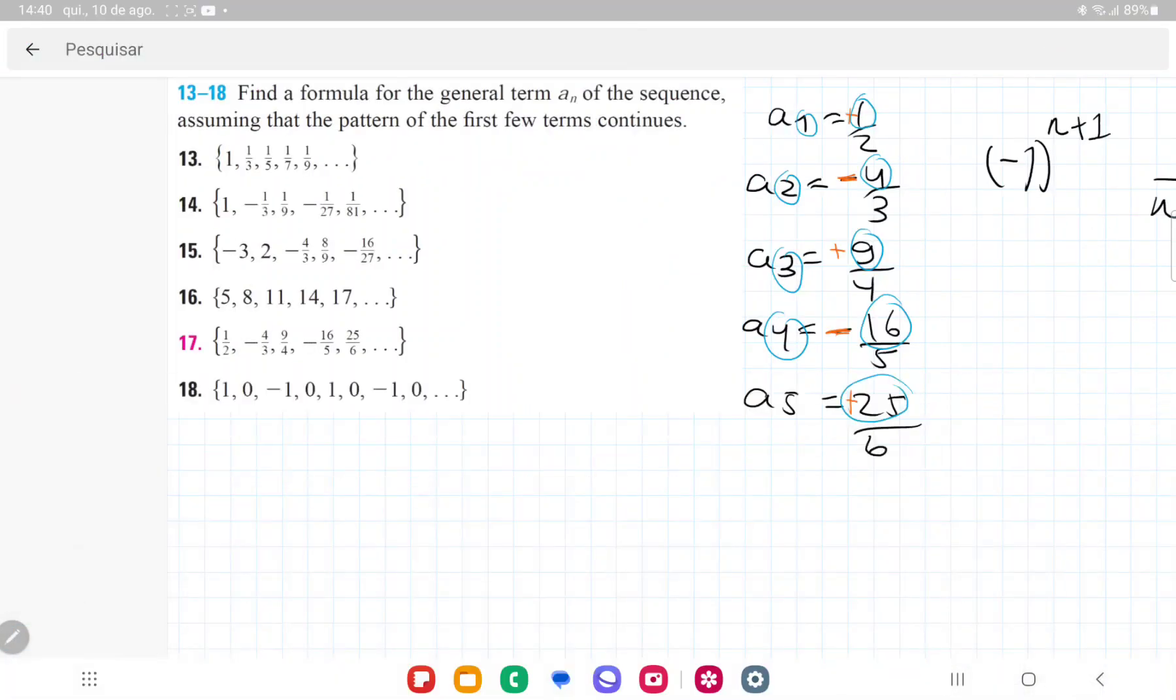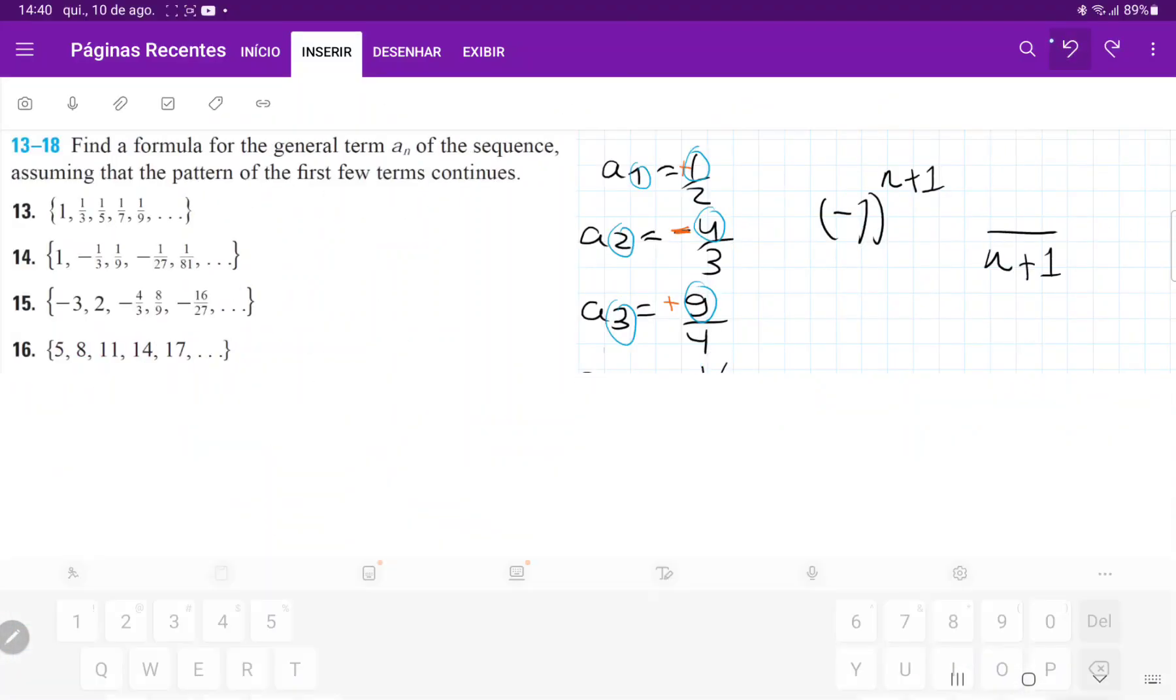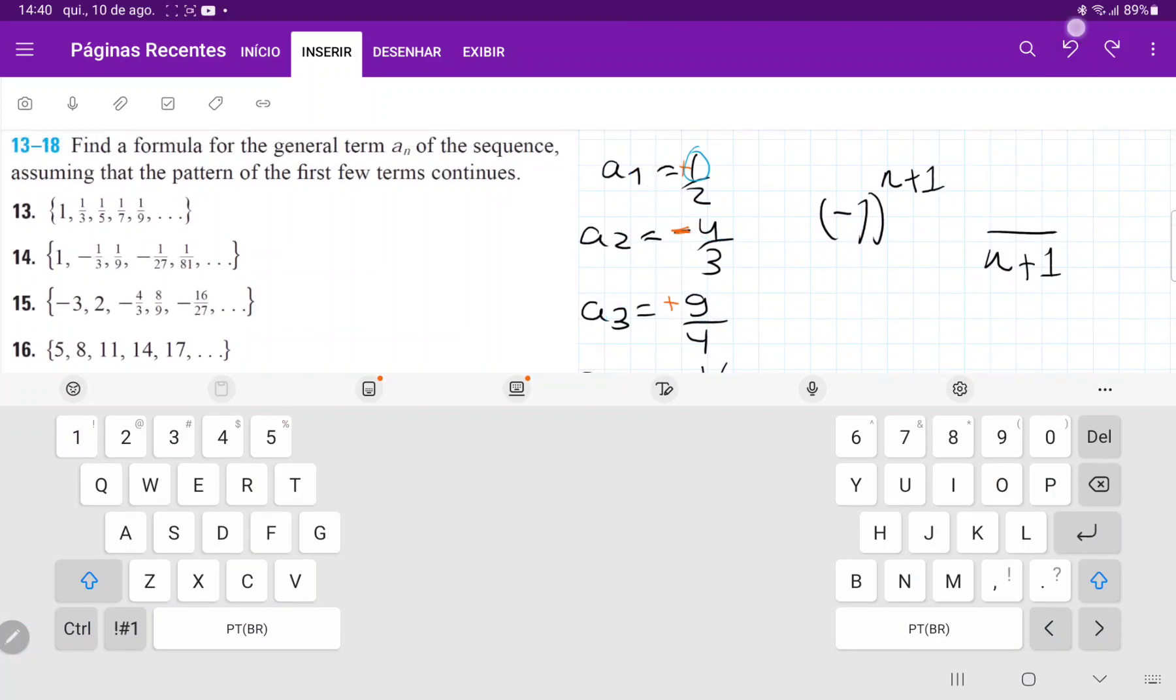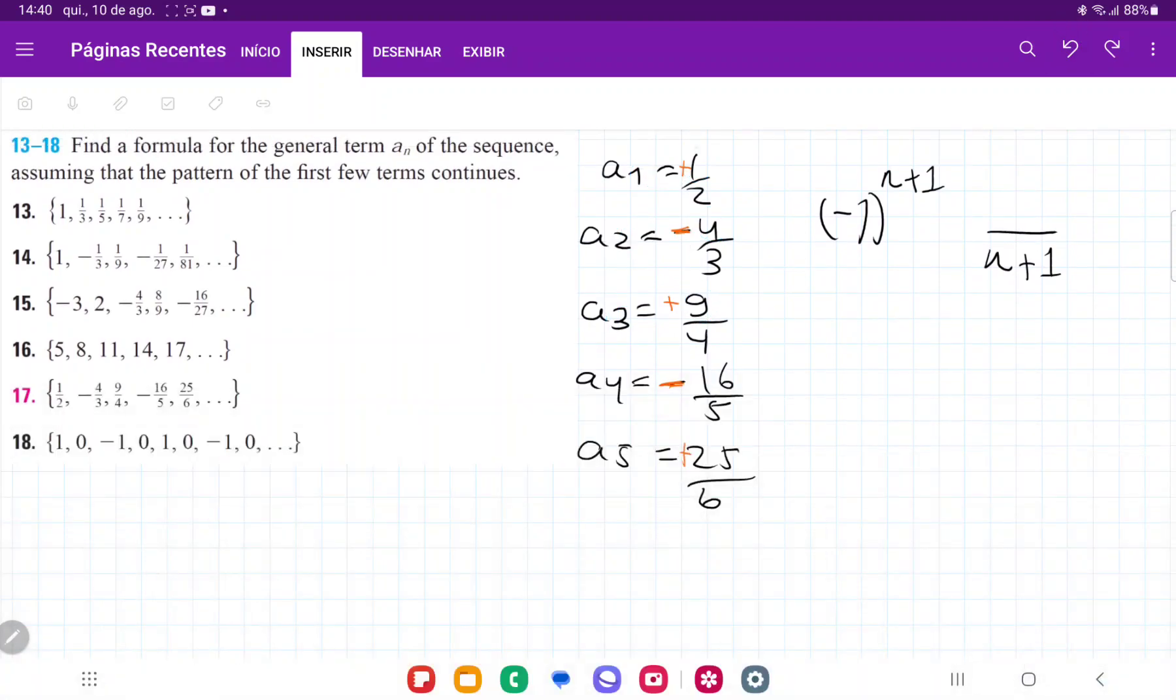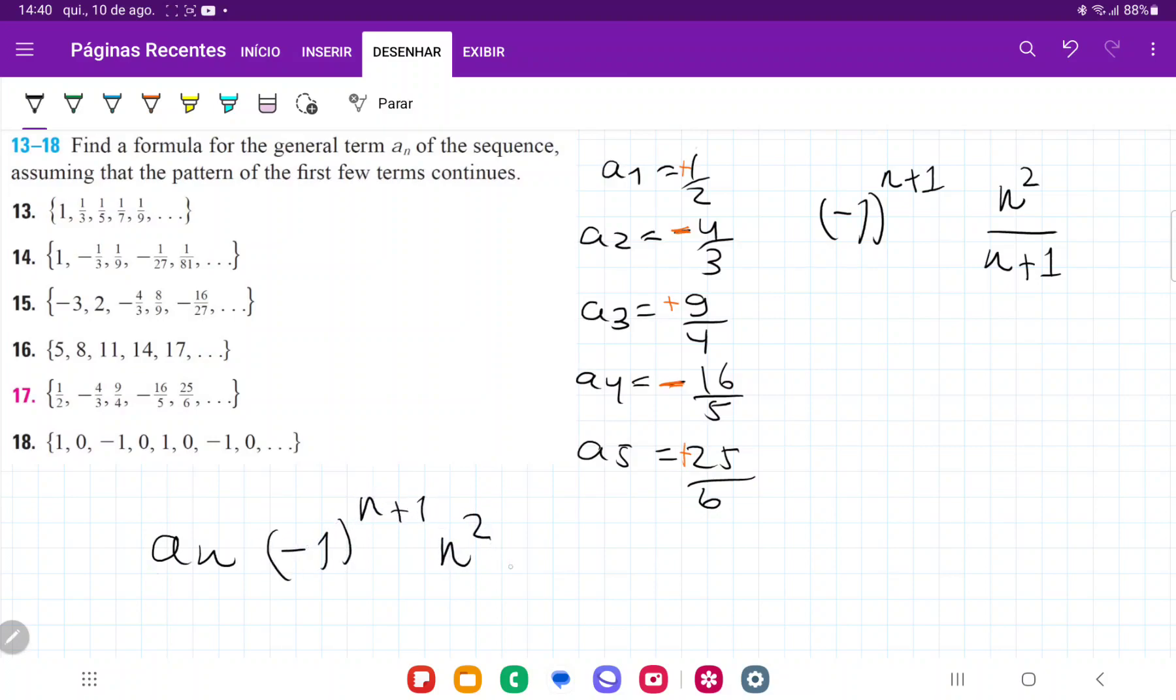The numerator is just going to be the index squared. So our aₙ is going to be (-1)^(n+1) times n² over (n+1). That is the general formula of the sequence.